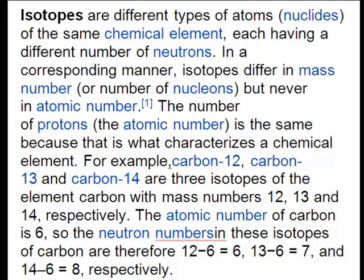The number of protons, the atomic number, is the same because that is what characterizes a chemical element. For example, carbon-12, carbon-13, and carbon-14 are three isotopes of the element carbon with mass numbers of 12, 13, and 14, respectively.